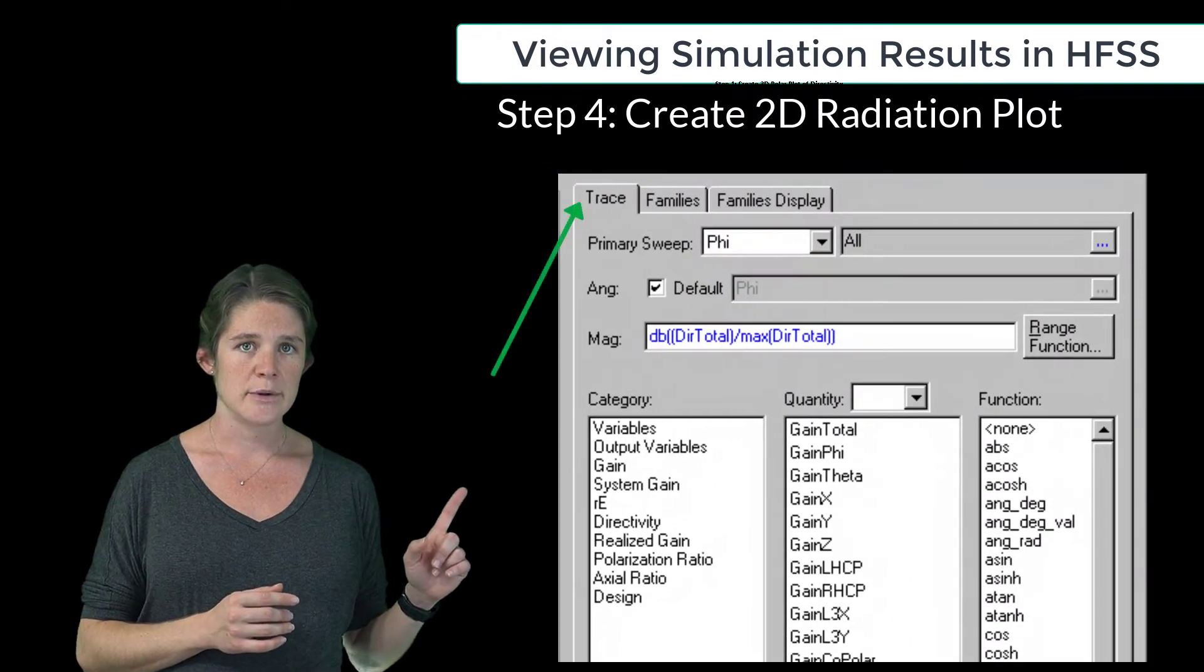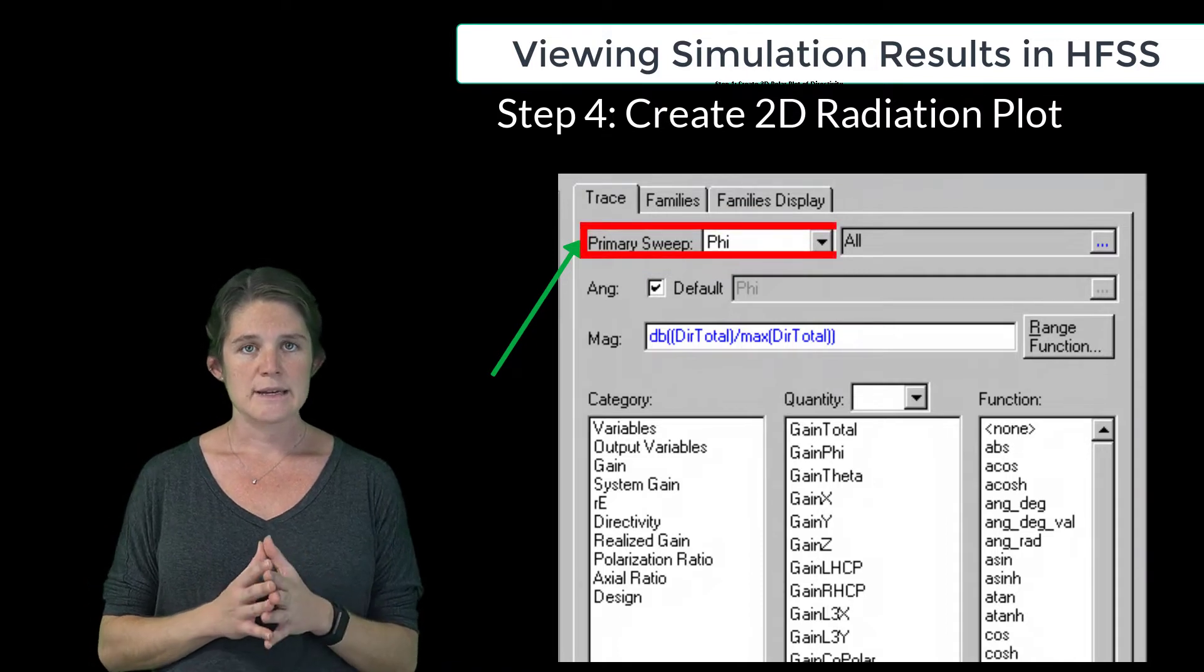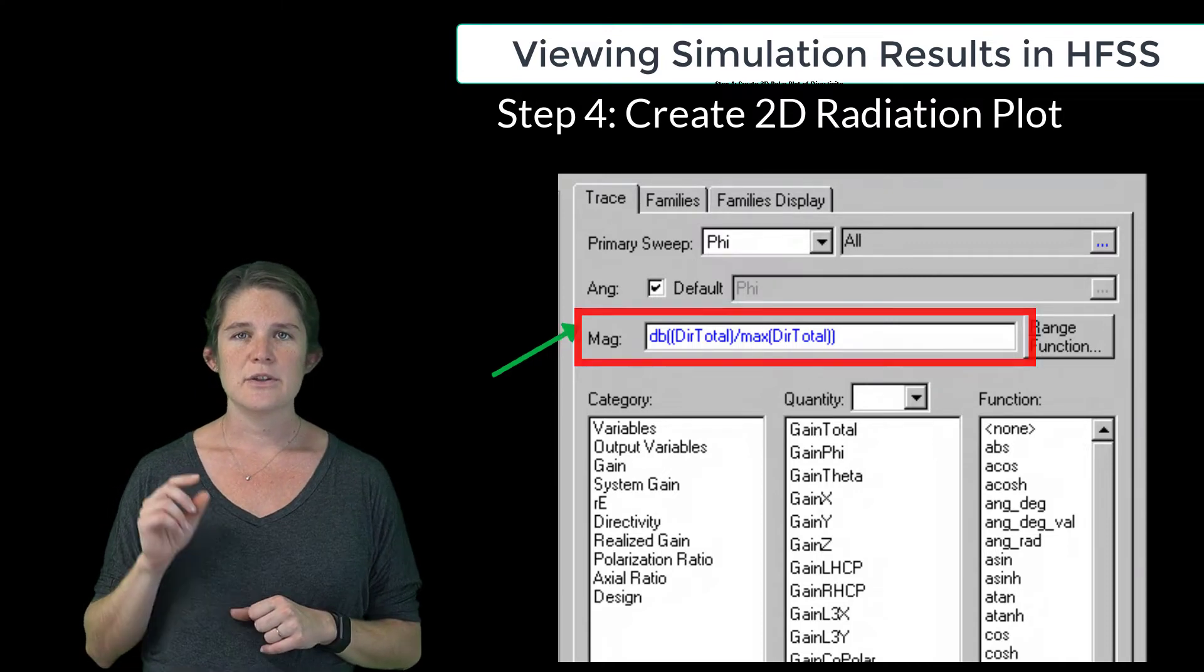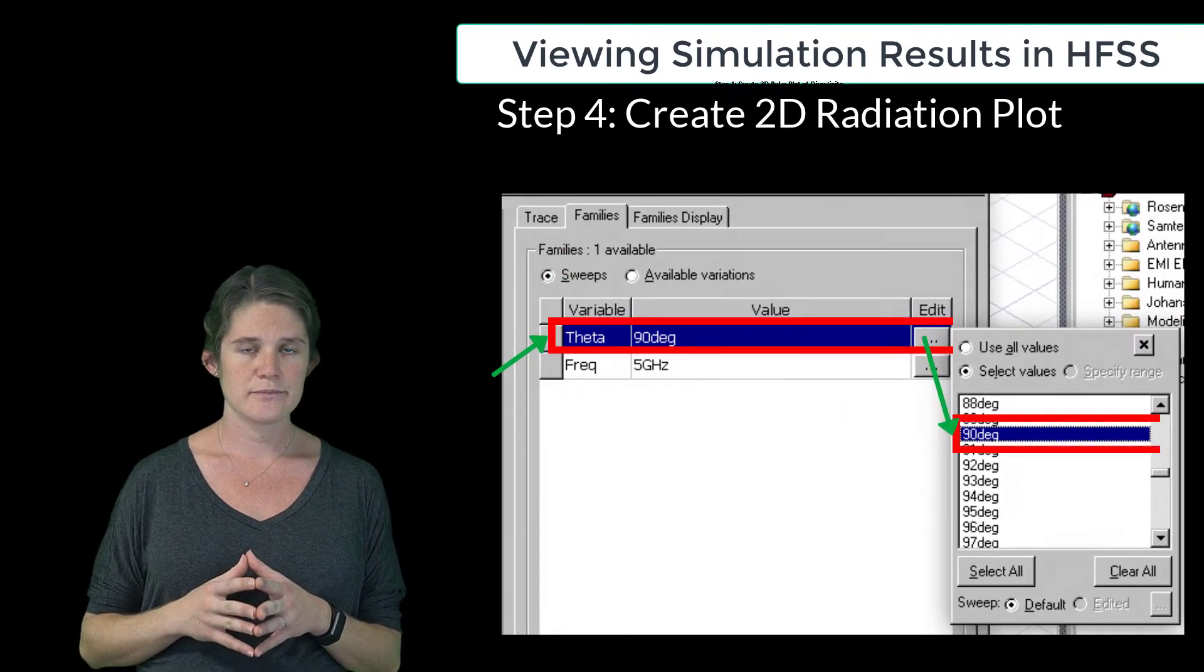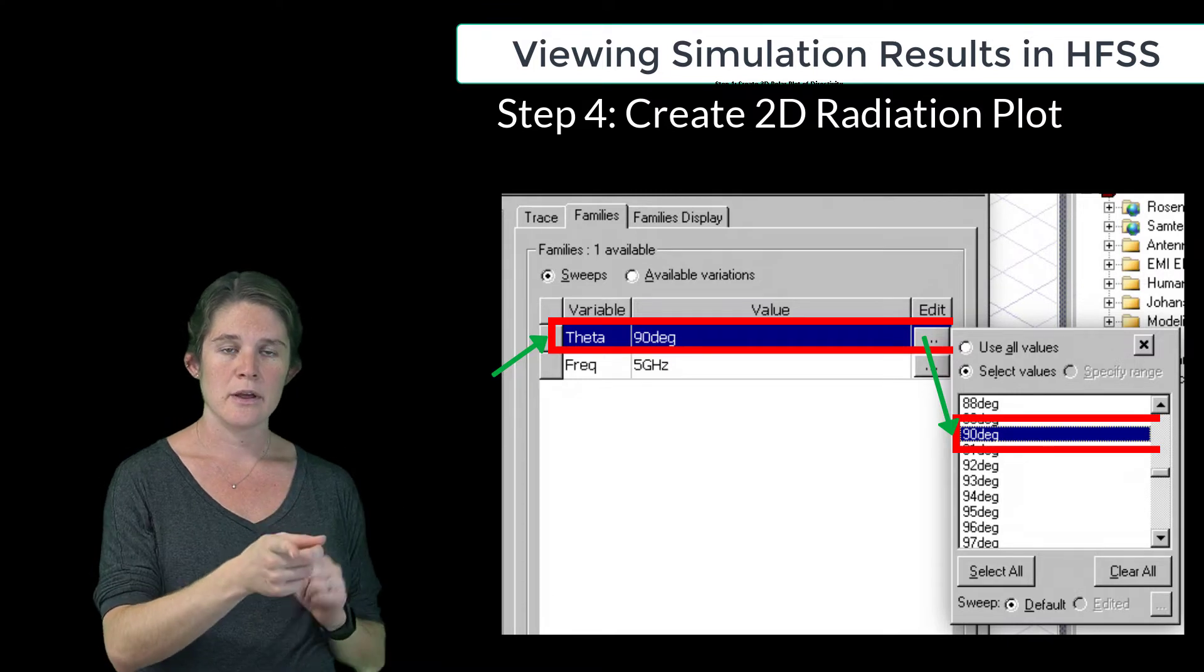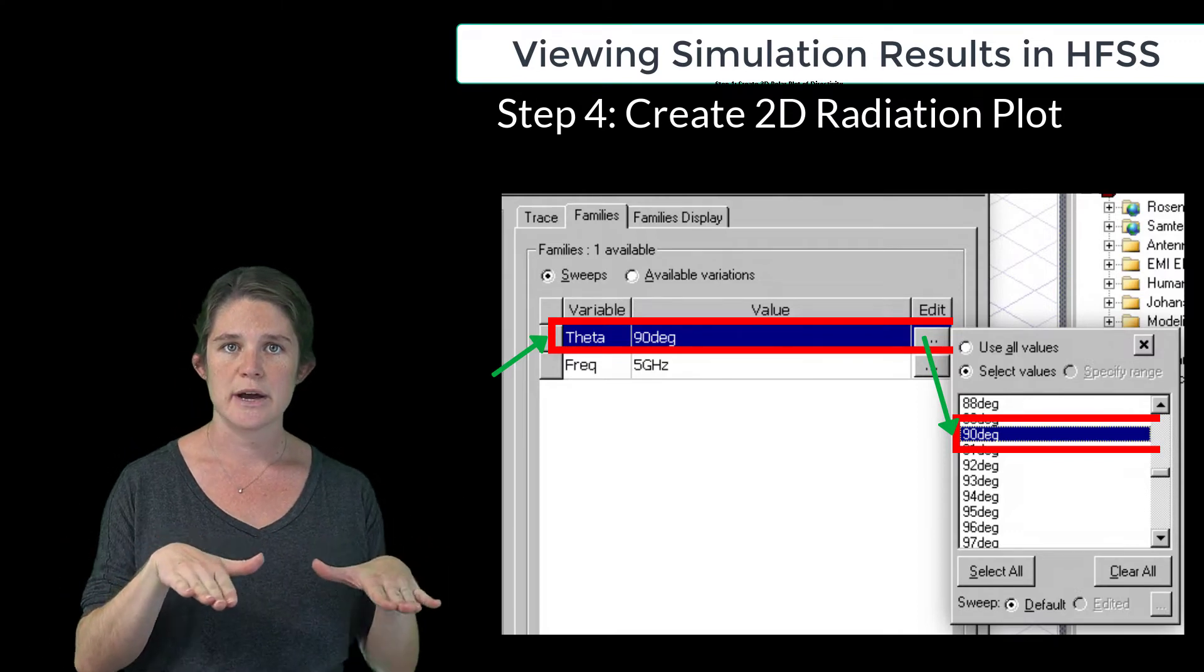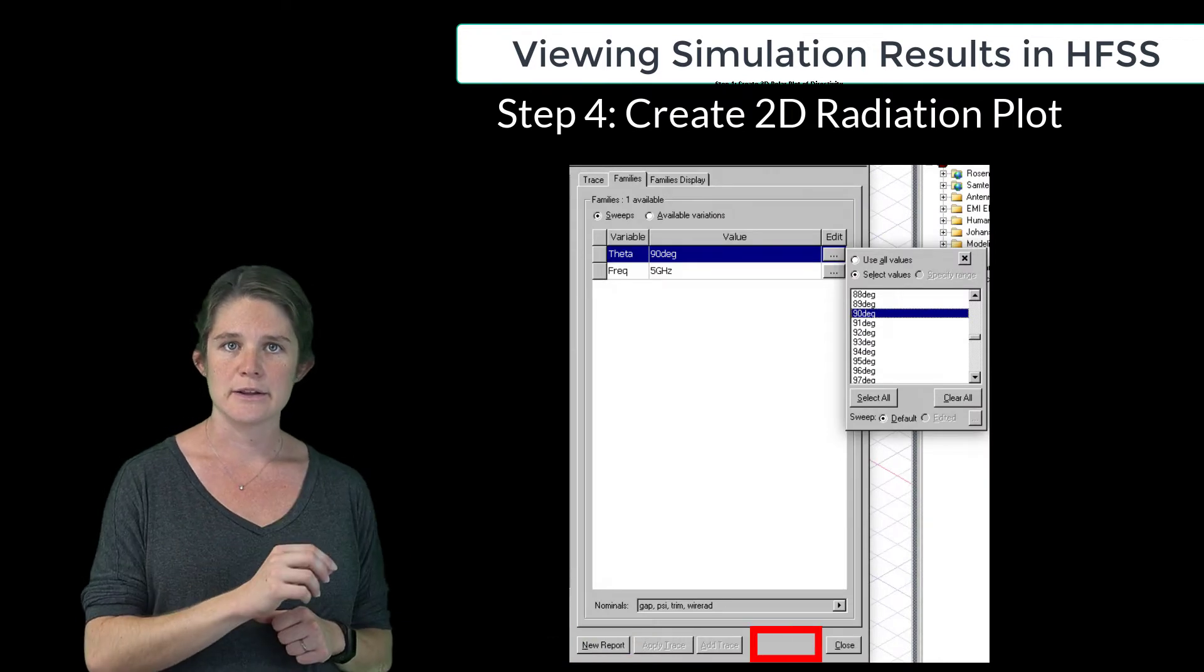In the pop-up window that results, in the Trace tab, choose Primary Sweep of Phi, and type in dB directivity total over max directivity total in the mag field. Under the Families tab, set the theta value to 90 degrees. Note here, we're plotting a sweep of the Phi variable with a set theta value of 90 degrees, which means we're looking at a 2D slice of the radiation plot in the XY plane. Now click New Report, and then Close.